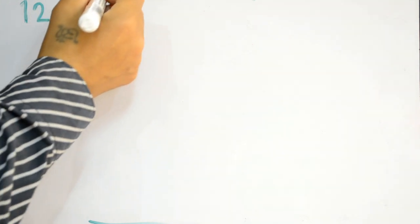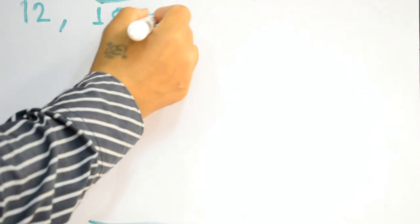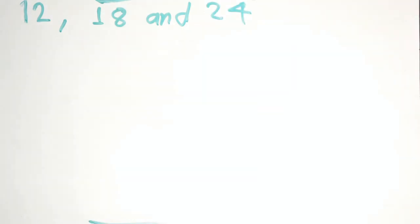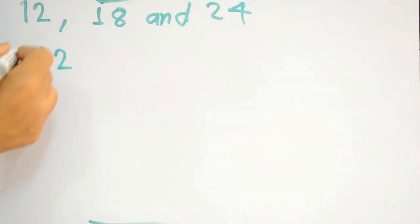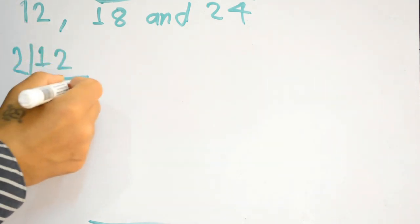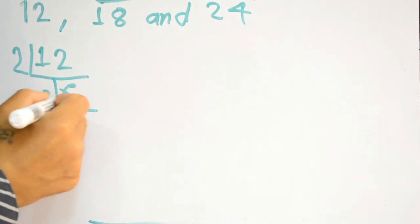Again, 12 we have to divide. It is divisible by 2. 2 times 6. Then 6 is divisible by 2. 2 times 3. So all are prime numbers here.